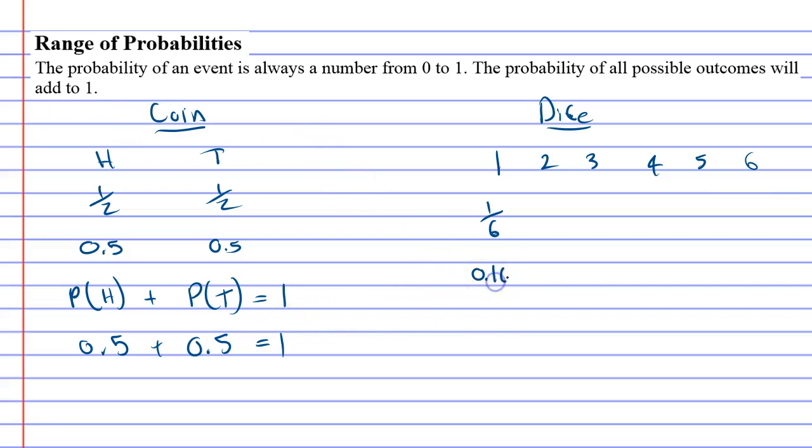It's 0.16 continuous. So once again, it's a number between 0 to 1 as all probabilities are.